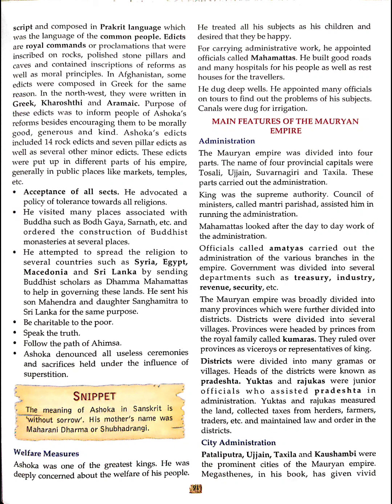Ashoka advocated a policy of tolerance toward all religions. He visited many places associated with Buddha, such as Bodh Gaya and Sarnath, and ordered the construction of Buddhist monasteries at several places. He attempted to spread Buddhism to several countries such as Syria, Egypt, Macedonia, and Sri Lanka by sending Buddhist scholars as Dhamma Mahamatras. He also sent his son Mahendra and daughter Sanghamitra to Sri Lanka for the same purpose.